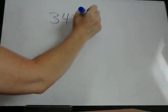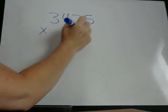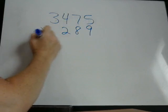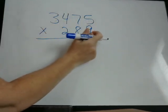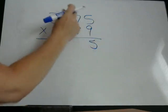We'll do one more. 3,475 times 289. Again, start on the right. 9 times 5 is 45. We write that like this. 45.